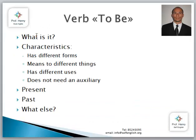First of all, we are going to see what it is — what is the verb to be? Then we are going to work with some characteristics. We are going to say that the verb to be has different forms. It means two different things in Spanish. It has different uses. And it is an extraordinary verb because it doesn't need an auxiliary. All the verbs in English need an auxiliary, but the verb to be does not need it. We are going to see how to use the verb to be in present, in past, and whatever else is important, we are going to go through it.